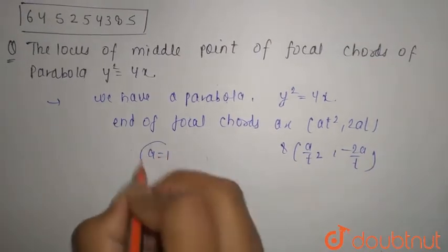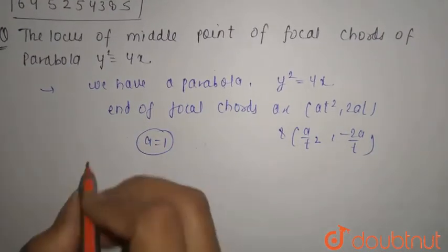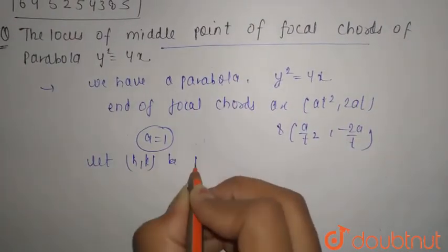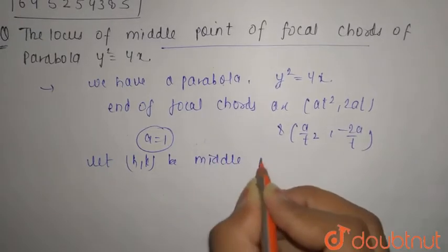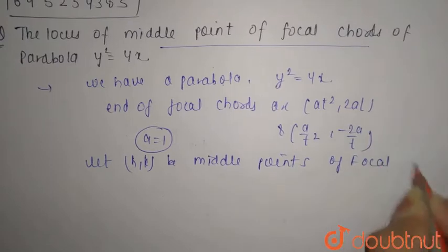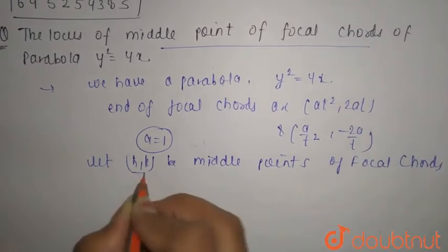Let (h, k) be the middle point of the focal chord. We need to find the locus of this middle point.